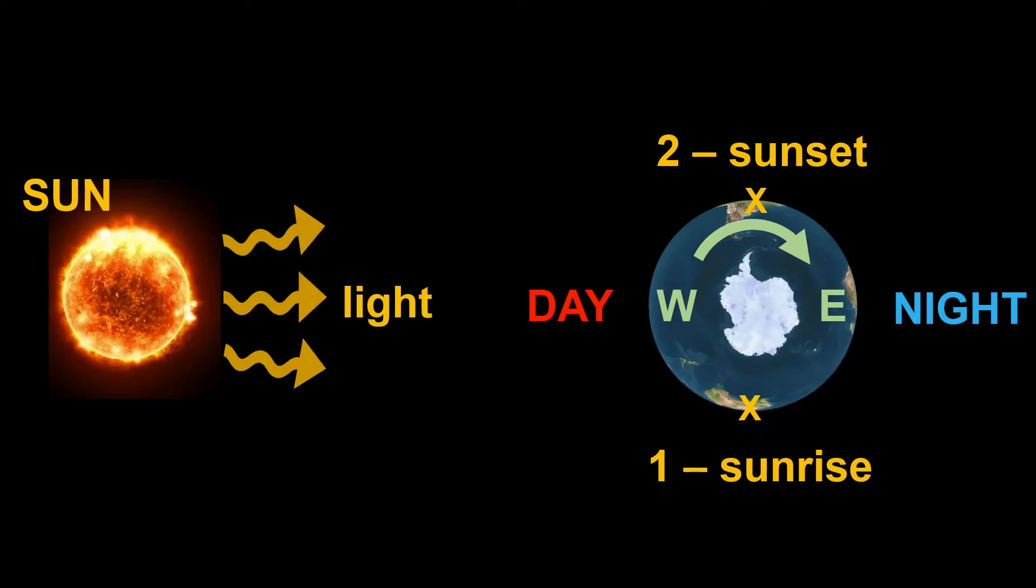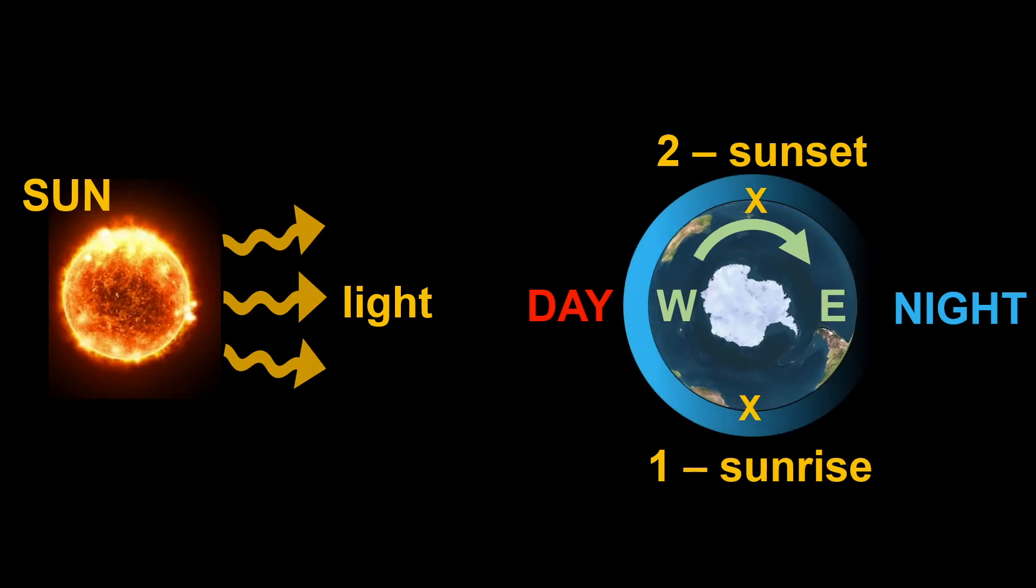If we just considered the light from the sun, there should be no difference between sunrise and sunset. But on earth, there is an atmosphere, and the status of the atmosphere can affect the scattering of the light.